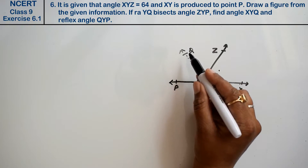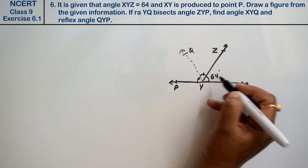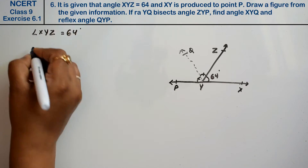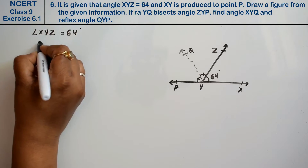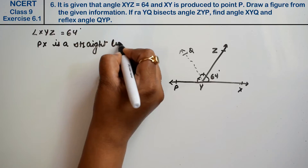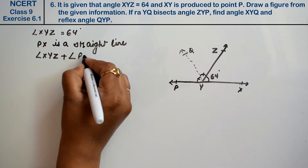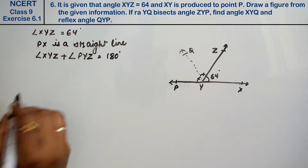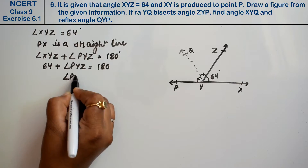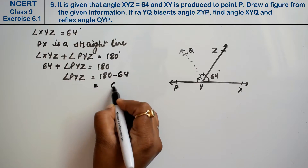Find angle XYQ and reflex angle of QYP. हमें पता है angle XYZ दे रखा है 64 degree। Ray opposite side extend हुई है तो PX एक straight line हो गई। तो angle XYZ plus angle PYZ equals to 180 degree। XYZ कितना दे रखा था — 64, और PYZ हमें निकालना है। तो PYZ equals to 180 minus 64 = 116 degree.